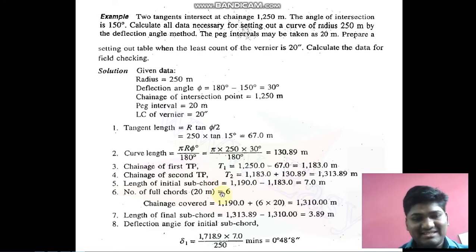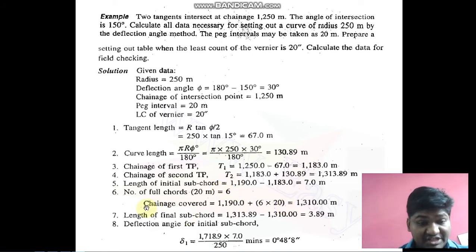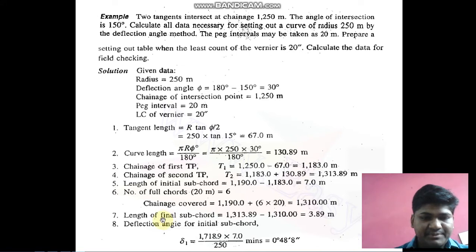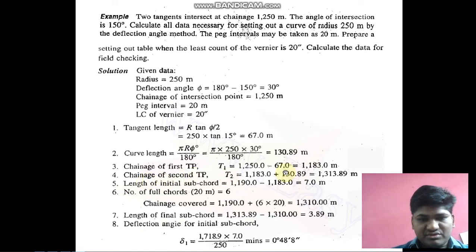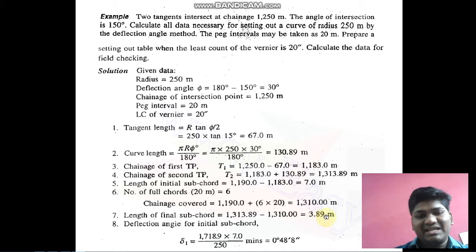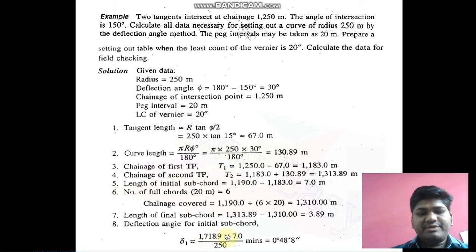Next is chain covered: round-up chainage of T1 plus (number of full chords × peg interval). Then the length of the final sub-chord is chainage of T2 minus total chainage covered, which gives 3.89 meters. For the deflection angle, I have already calculated all necessary data. The formula is: δ = 1718.9 × L / R, where L is the chord length and R is the radius.